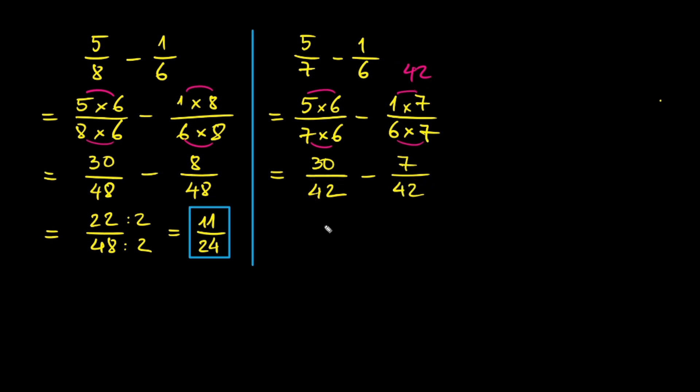Now that both fractions have the same denominator, we can subtract the numerators. 30 minus 7 is 23. So the final answer is 23 over 42.